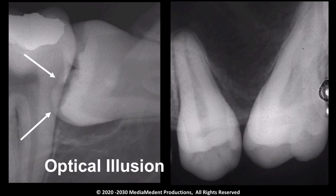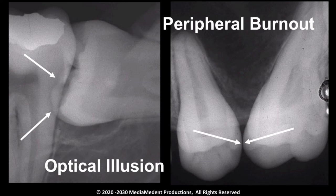When viewing the radiographic image of teeth, it is important to be aware of two artifacts of imaging. First, when the images of two very dense objects are superimposed, the image of one appears to be outlined with a radiolucent band. This radiolucency does not represent a loss of tooth structure, but instead is an optical illusion. Second, two objects physically in contact will appear to be separated by a radiolucency. This is referred to as peripheral burnout, and is evident because the narrow point of contact of the objects allows more x-rays to pass than the adjacent thicker regions of teeth.